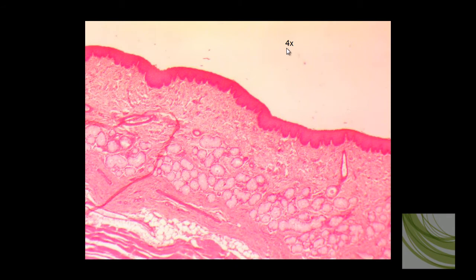We will look at the first slide starting with the 4X objective, and we can see a lot of tissue in here. The stratified squamous epithelial is this strip right along the top here — the darker pink. Underneath is dense, irregular connective tissue. We can also see some adipose tissue and even some little arterioles scattered amongst this dense, irregular connective tissue. We're going to focus in right on that area of stratified squamous epithelial tissue.